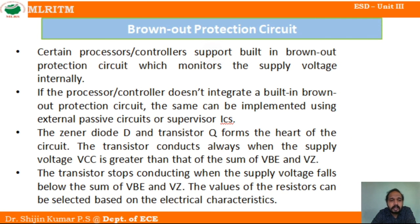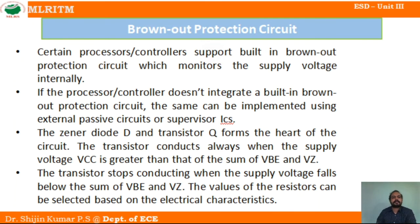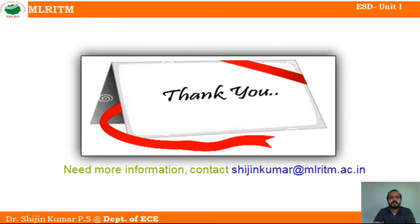The resistors will be selected based on the electrical characteristics. We perform a comparison to check whether brownout is happening or not. When VCC falls below the sum of VBE and VZ — the voltage across the transistor and the Zener diode — we calculate and compare that sum with VCC. This is how a brownout protection circuit operates.